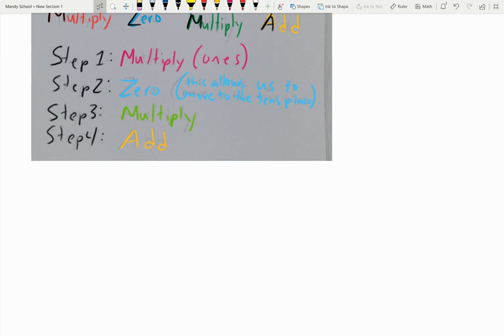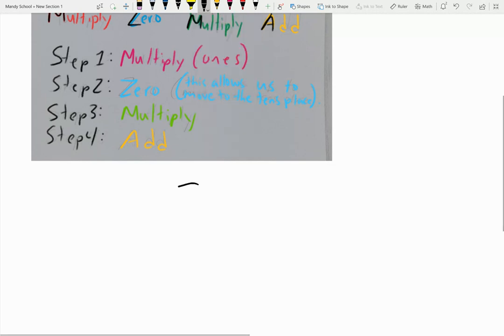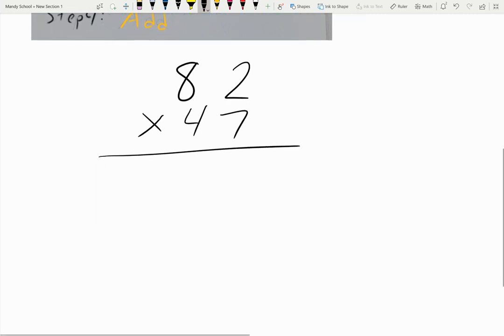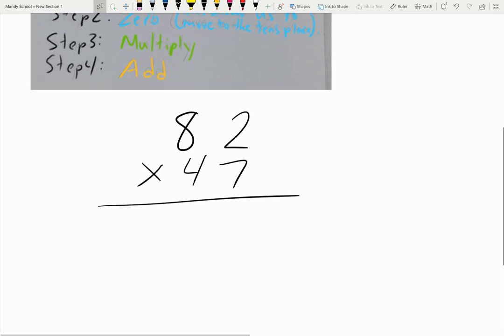So now let's take a look. Let's do an example together. A good example together would be, let's say we will multiply 82 times 47. So go ahead, write that on your paper. And when we look at 82 times 47, we need to think of step one, we're going to multiply the number in the ones place.